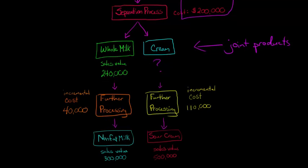And so when we're going to process them further, for the whole milk, it's going to cost us an extra $40,000, and it's going to give us nonfat milk, which will have a final sales value of $300,000. And then the sour cream, we're going to take the cream and make sour cream that's going to have a final sales value of $500,000.